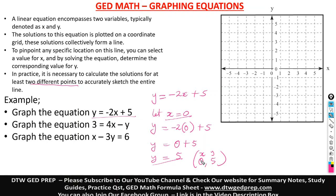This is just one point. As we said, we need two different points for our solution to be accurately sketched. You can pick any point again — you can say let X be one, two, three, or four. Let's choose X equal to four. Don't use the same point twice — use a different point. It's going to help let your line be a bit extended.